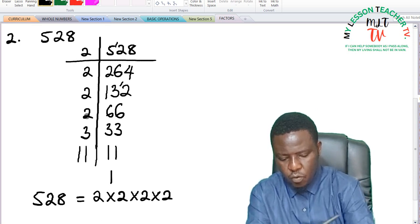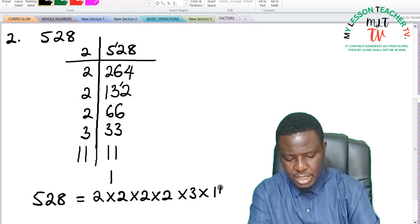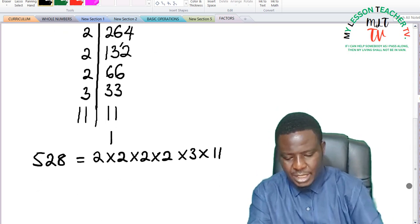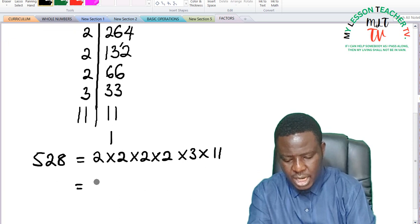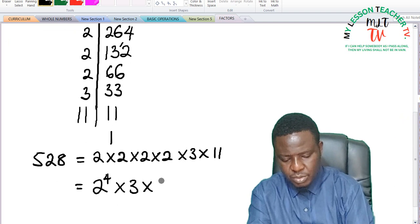Four 2s times 3 times 11, which in index notation can be written as 2 raised to the power of 4 times 3 times 11.